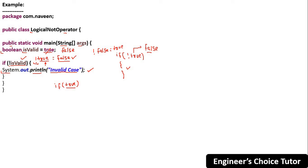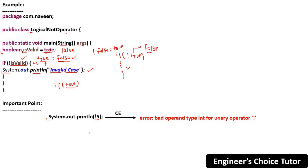One important point: we said logical NOT is only applicable for boolean type, not for integral types. If I try to apply it on an integral type like NOT of five, what will happen? You will get a compile time error: bad operand type int for unary operator logical NOT.